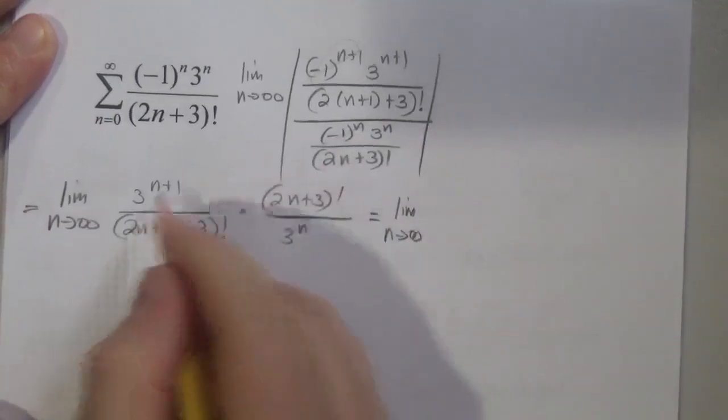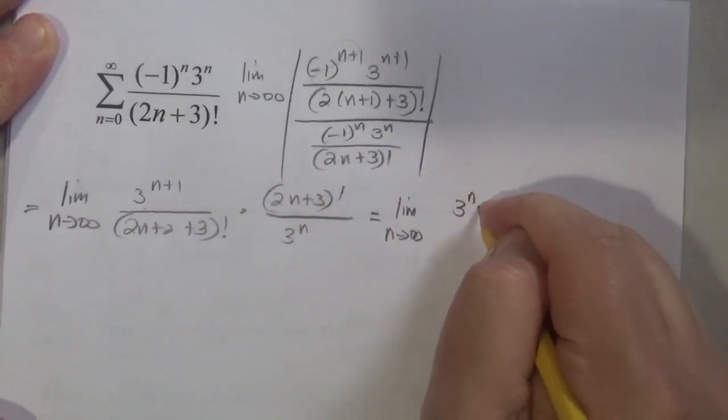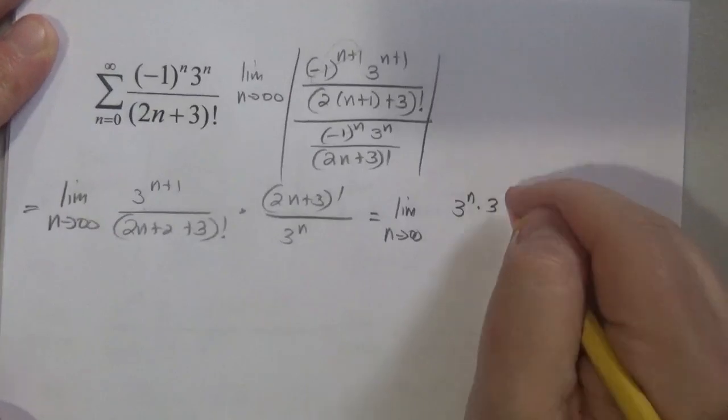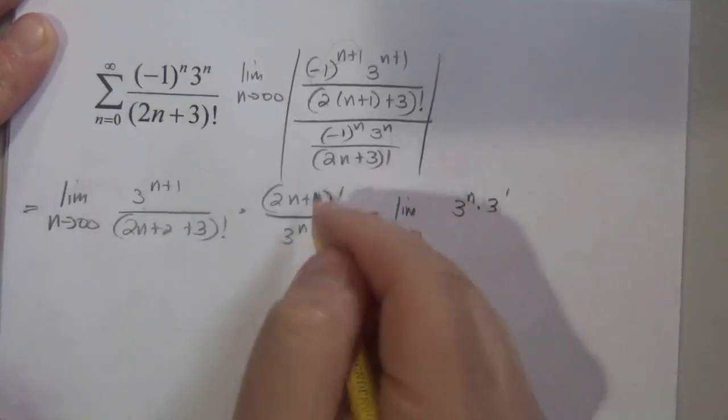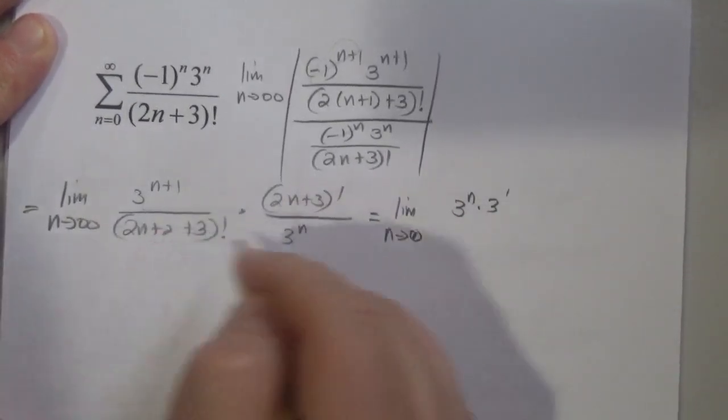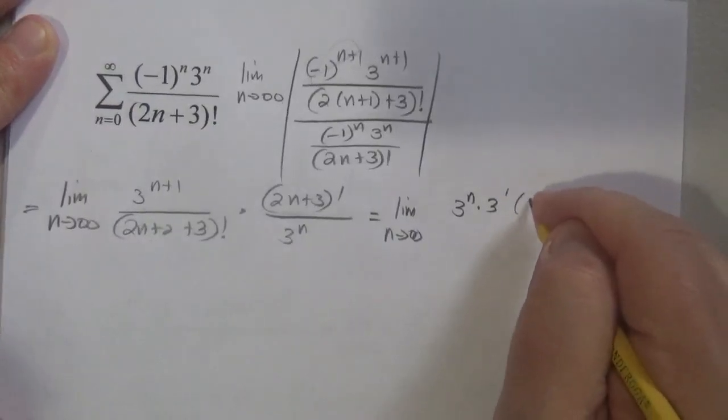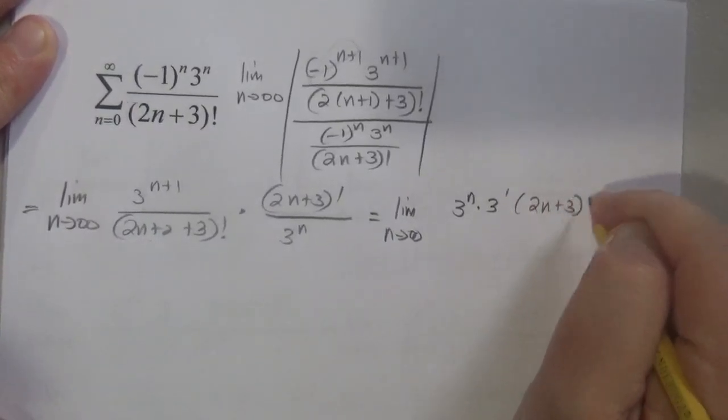Notice I dropped the absolute value bars because I made all these terms positive. I'm going to rewrite 3 to the n as 3 to the n times 3 to the first. This one is smaller than this one because it's (2n + 5), so I'm going to leave that one alone: (2n + 3) factorial.